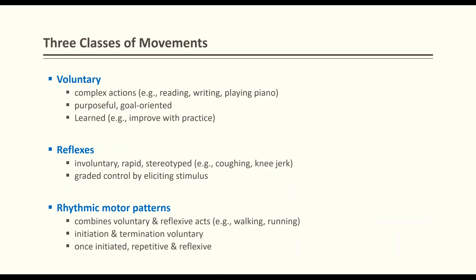There are three classes of movement. We have voluntary movement, reflexes, and rhythmic motor patterns. Voluntary movements are complex actions such as reading, writing, playing piano, or playing soccer — they are purposeful, goal-oriented, self-initiated, and learned movements that improve with practice. Reflexes are involuntary, rapid, and stereotyped — such as coughing, knee jerk, and ankle jerk — and they are graded, controlled by eliciting stimuli.